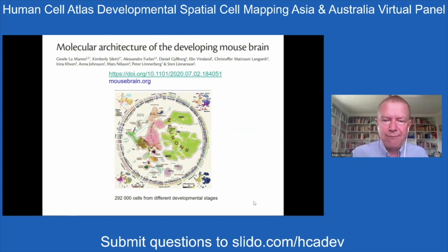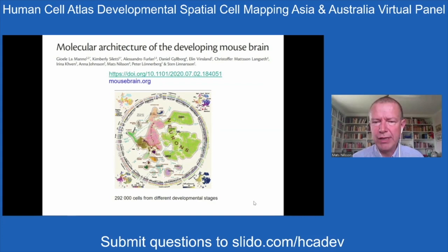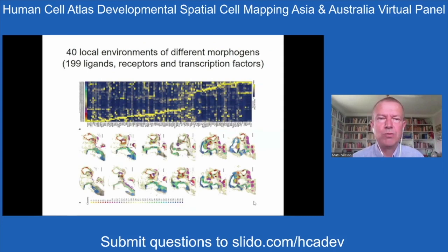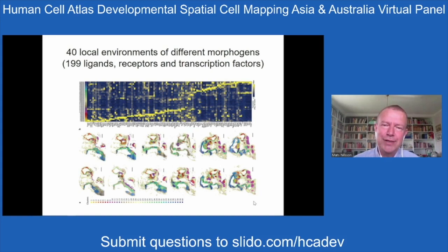One thing I presented was our contribution to recent work from Stjern Linnarkon's group on studying mouse brain development — close to 300,000 cells across different developmental stages. They generated the first atlas of brain development with different continua of cell types emerging. We targeted 119 ligands and receptor-centric factors predicted to be active in the organizers of the system, defining 40 different local environments at embryonic day 10.